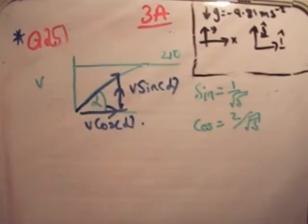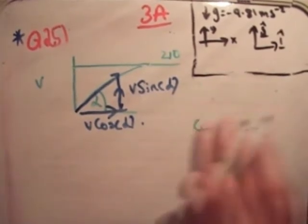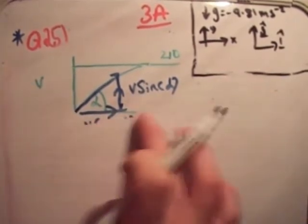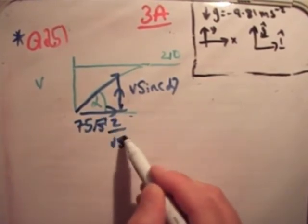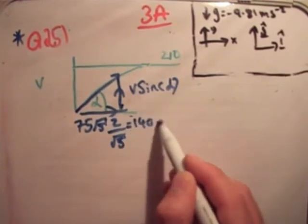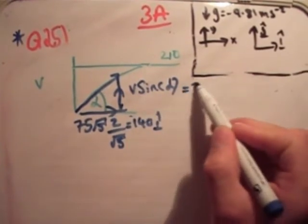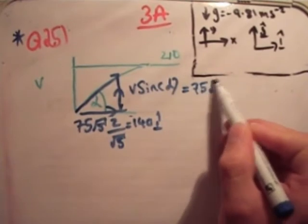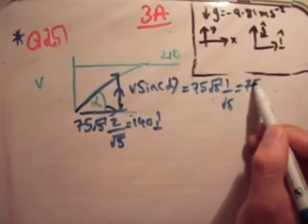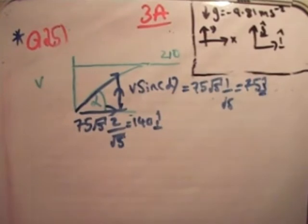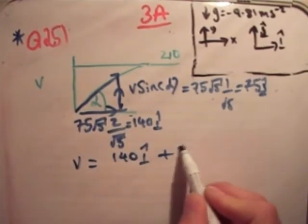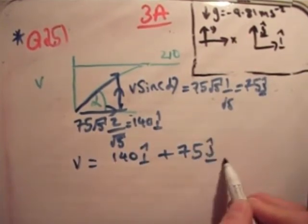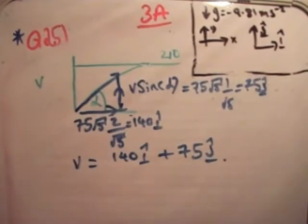We're given that the initial velocity is 75 root 5. And we know what sine and cos are. So this is going to be 75 root 5 times 2 over root 5 equals 140 i hat. And similarly, this is 75 root 5 times 1 over root 5 is equal to 75 j hat. So we know that V is equal to 140 i hat plus 75 j hat.